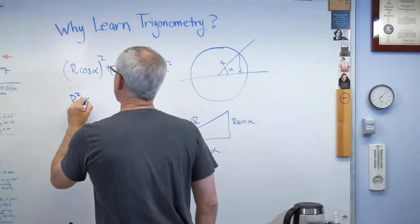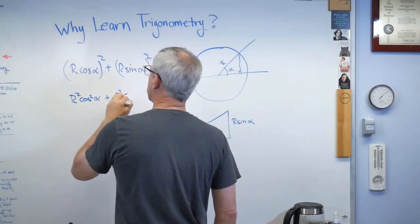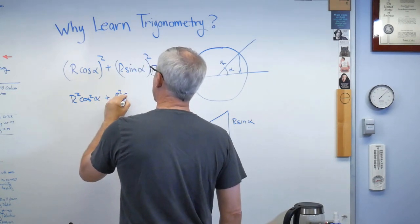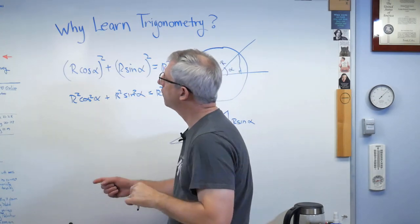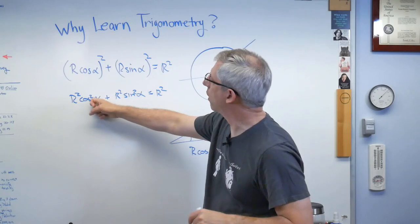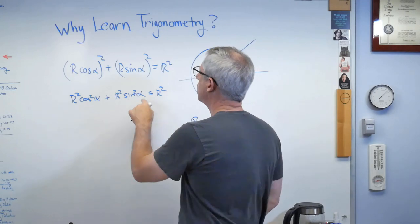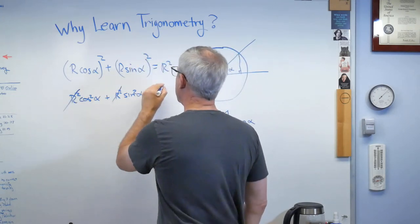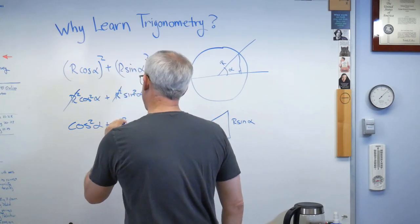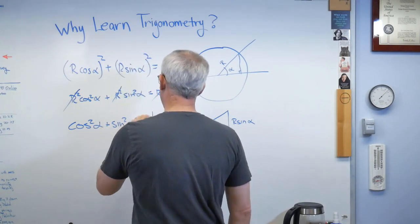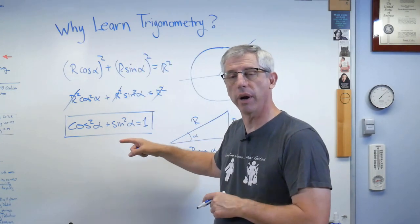So, r squared cosine squared alpha plus r squared sine squared alpha equals r squared. And by the way, by convention, we write the square after the function, not after the angle. So this is how you do this. r squared appears in every term, so we get to cancel that out, and we find out that cosine squared alpha plus sine squared alpha equals 1.